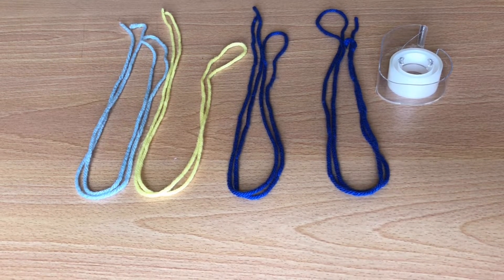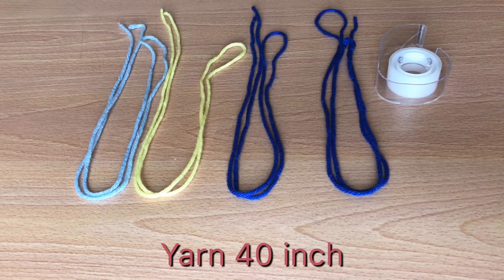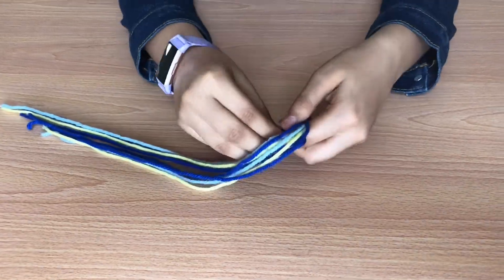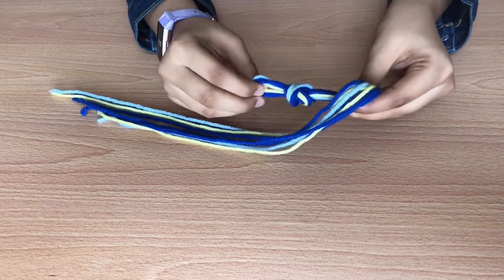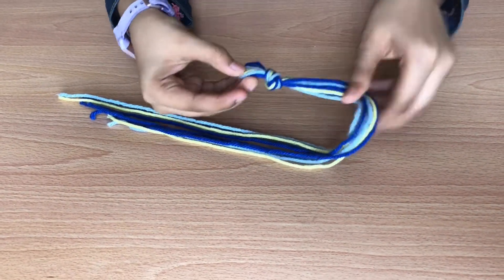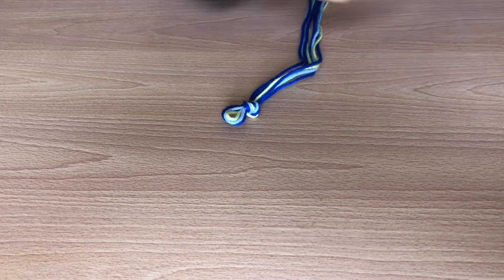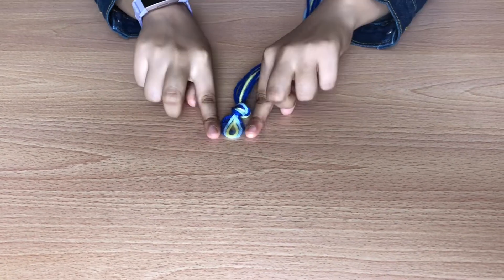To make this bracelet you'll need four pieces of yarn each 40 inches and some tape. To begin with we'll take the yarn and fold it in half and tie a knot on the loop side. After you're done with a knot tape that side to the table.